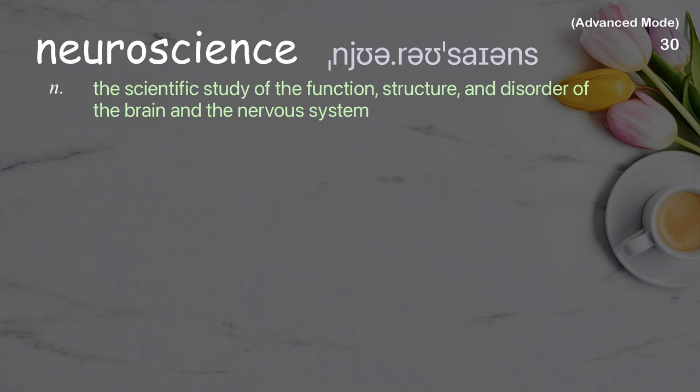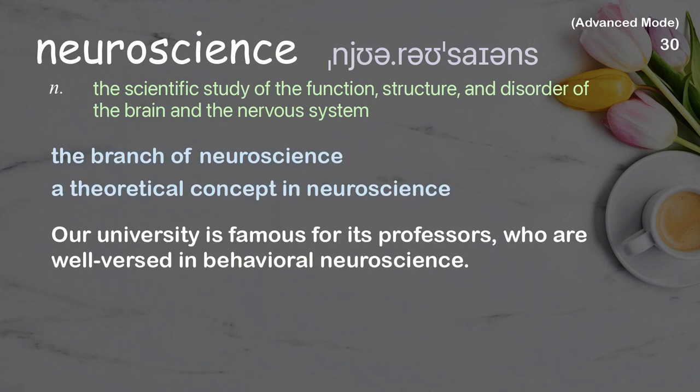Neuroscience: the scientific study of the function, structure, and disorder of the brain and the nervous system. Examples: a theoretical concept in neuroscience. Our university is famous for its professors who are well-versed in behavioral neuroscience.